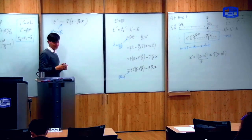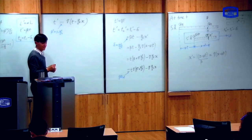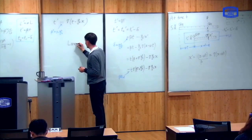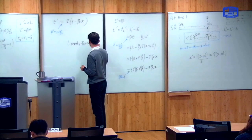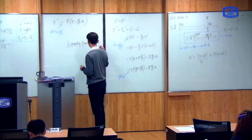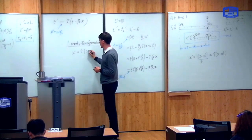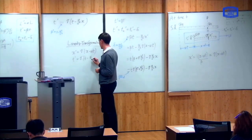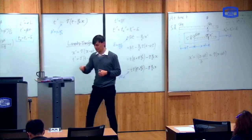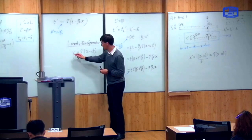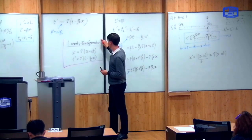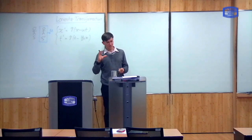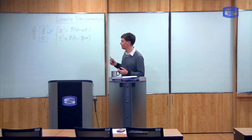So let me write up the summary. The Lorentz transformation says that X prime is equal to gamma times (X minus UT), and T prime is equal to gamma times (T minus U over c squared times X). These are the two key equations of the Lorentz transformation. In this class I want to mention a few more properties about the Lorentz transformation.